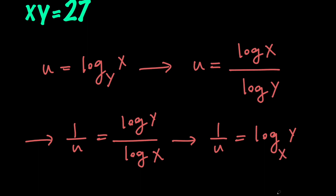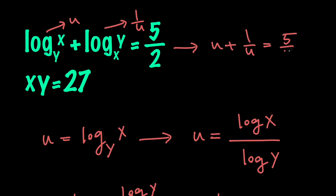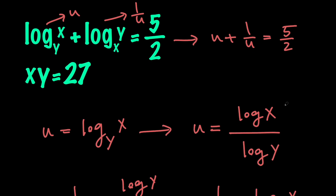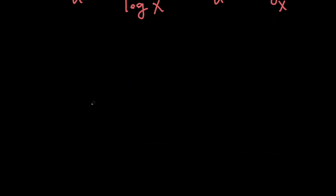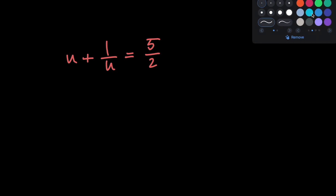So that means that once we replace log x with base y with u, log y with base x becomes 1 over u, which means that we have u plus 1 over u equals 5 halves. Now let's work on this equation and solve for u.